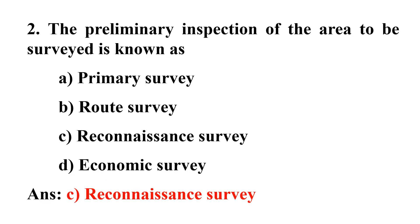Second question: The preliminary inspection of the area to be surveyed is known as? Option A: preliminary survey, Option B: route survey, Option C: recognition survey, Option D: economic survey.